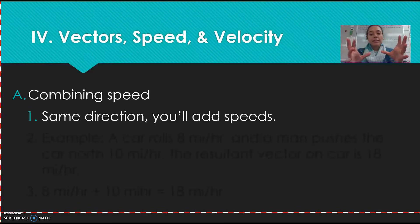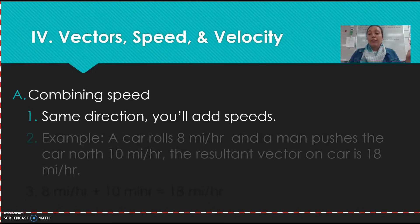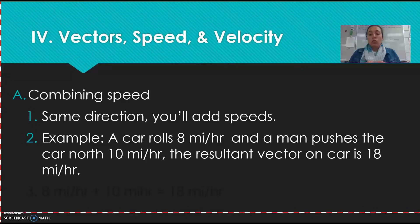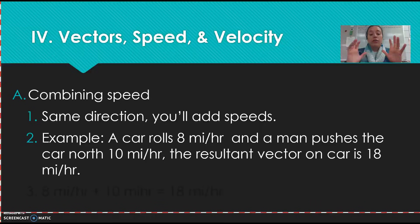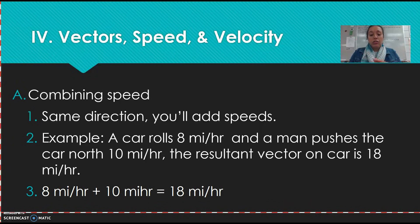The same idea applies to vector speed and velocity. If the speed is going in the same direction, you add them together. So if a car is rolling at eight miles per hour to the north and a person is pushing it at 10, you'd add them because you're going in the same direction — 10 plus eight equals 18 miles per hour. Same idea: if forces are acting in the same direction, you add.